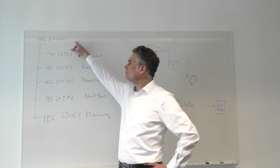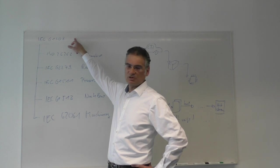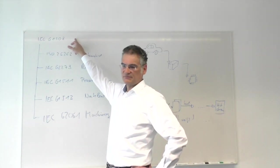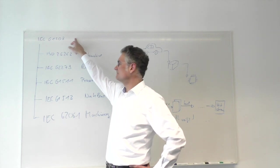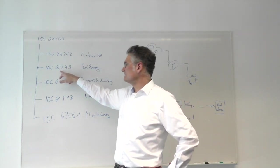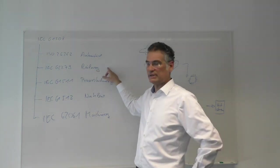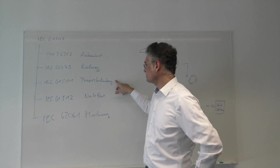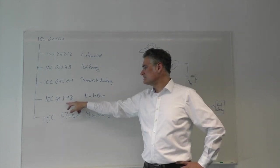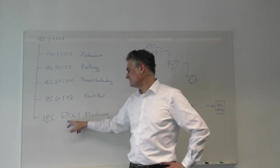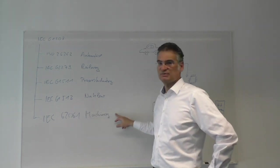First of all, in the top, there's the common safety standard that is the tree, the top of the tree for all safety standards. Then there's the automotive standard. There's IEC 62279 for railway. There's IEC 61511 for process industry. IEC 61513 for nuclear power plants and IEC 62061 for machinery industry.